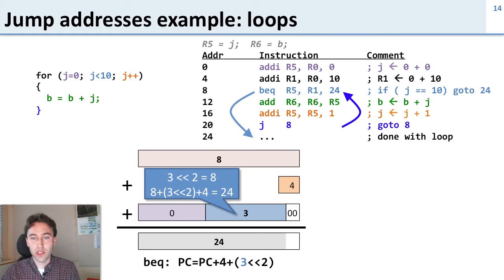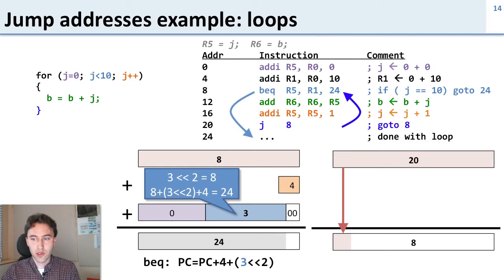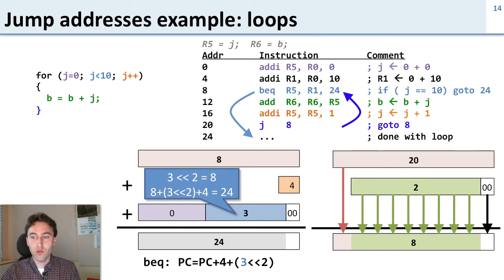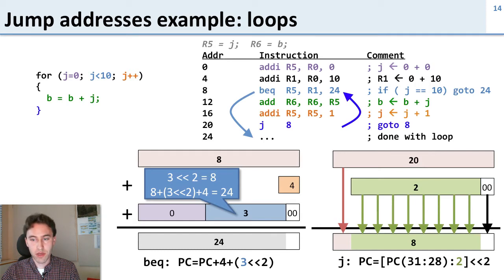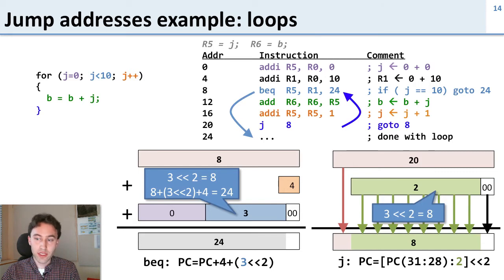Now let's look at the other instruction: the jump at the end, which goes from instruction 20 to instruction 8. Our current program counter is 20 and our new program counter is 8. The high bits pass right through, the lower two bits are 0, and we need to figure out what to put in the middle. We put 2, because this value is shifted over by two bits, making it an 8, and when we replace those bits we get 8. This is how you fill in those instructions — though when you write code you just specify a label and the assembler does all the math for you.